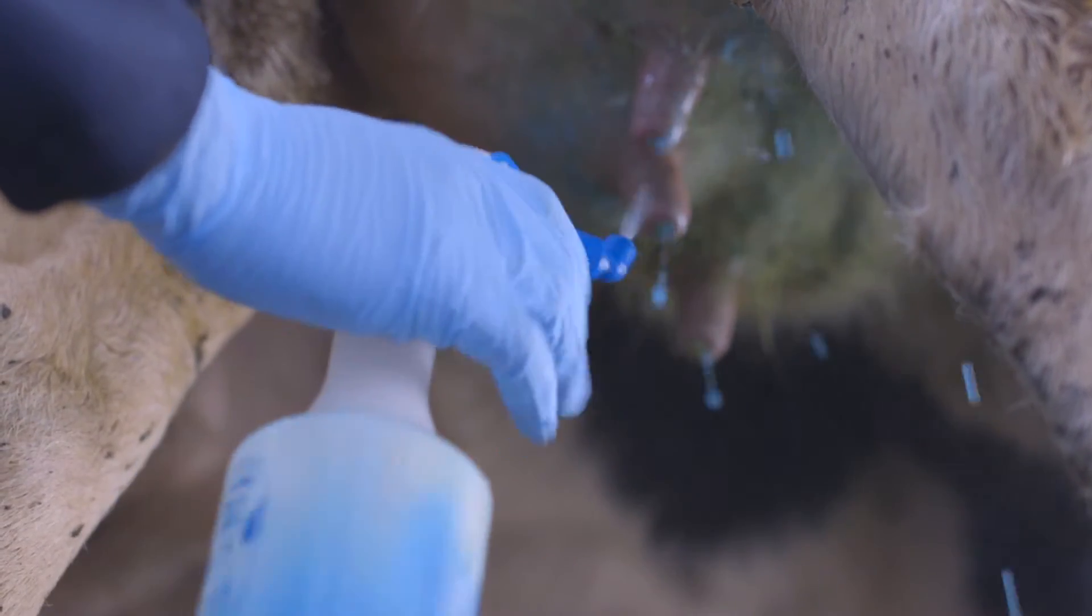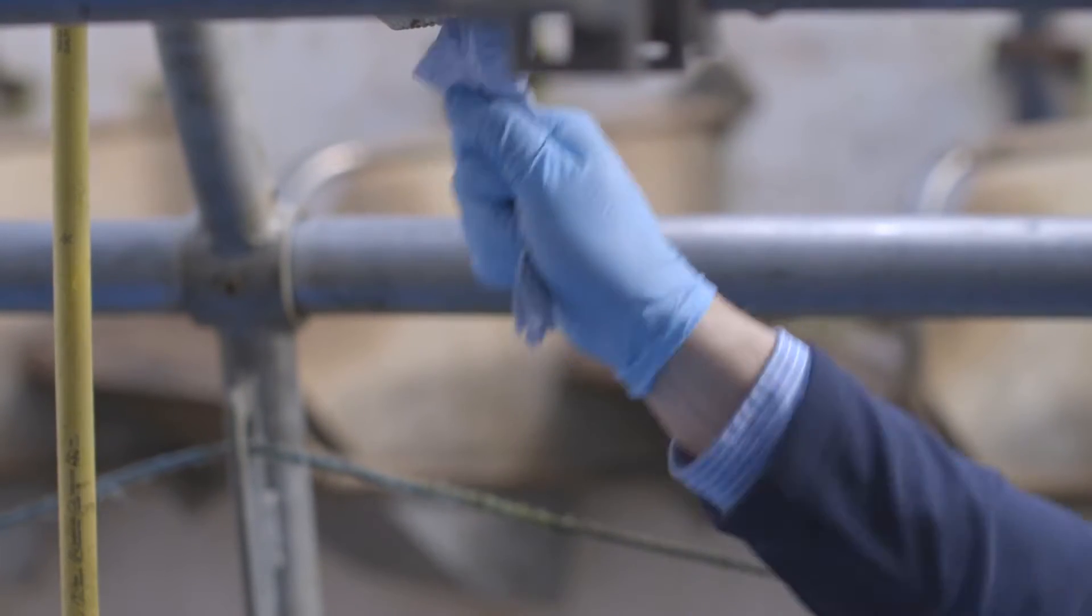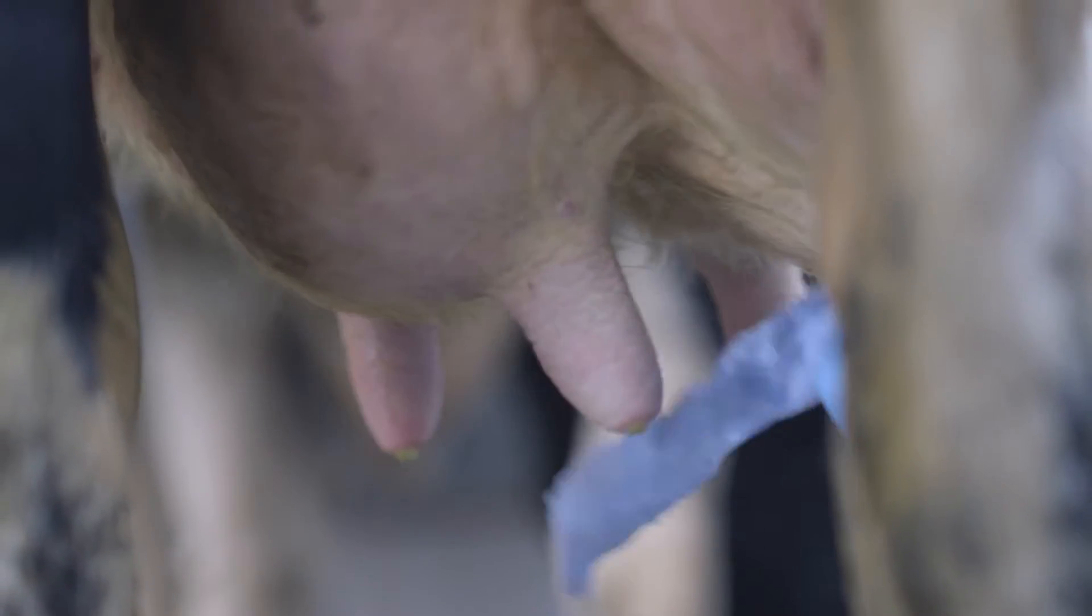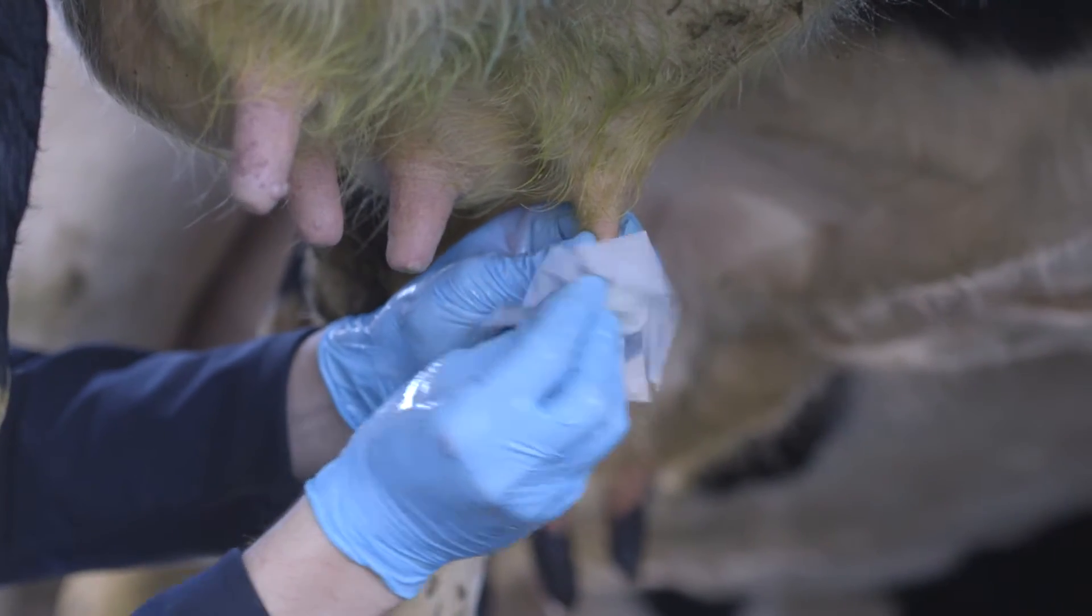Disinfect the teats to be sampled with teat dip or spray, but make sure to wipe this off afterwards so that it doesn't kill the bacteria in the sample collected. Use methylated spirits or medicated wipes to sterilize the teat end and scrub for five seconds.